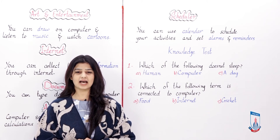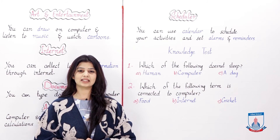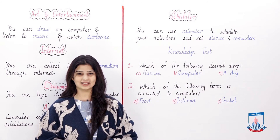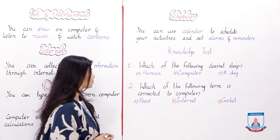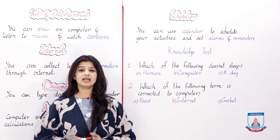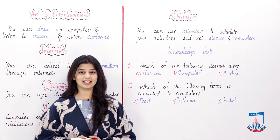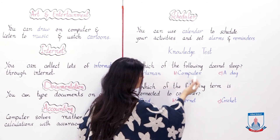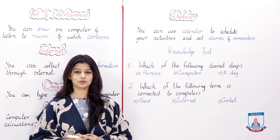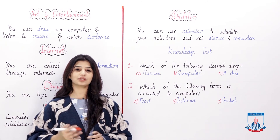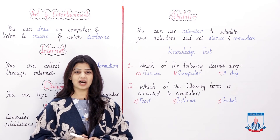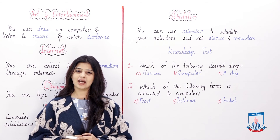These were some routine tasks in which the computer system helps us. Now let's do a small knowledge test to see what you have studied and remembered from this unit. The first question is: which of the following does not sleep? The options are human, computer, and dog. Humans sleep, dogs sleep, but you have never seen a computer sleeping — so the correct answer is computer.